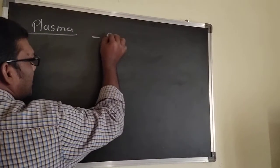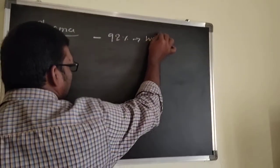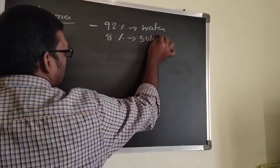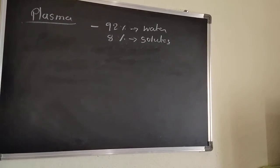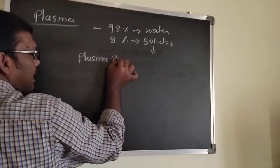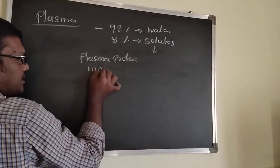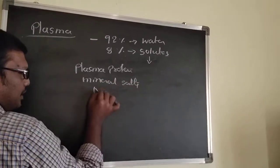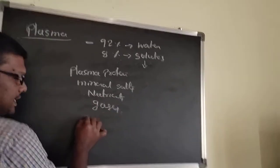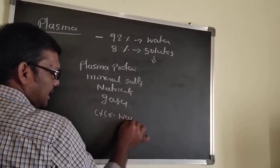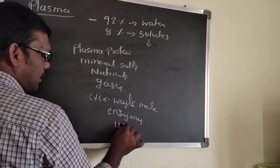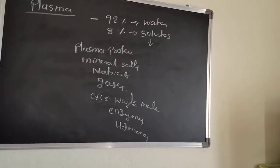The plasma consists of 92% water and 8% solutes. The solutes present in plasma are plasma proteins, mineral salts, nutrients, gases, excretory waste materials, enzymes, and hormones.